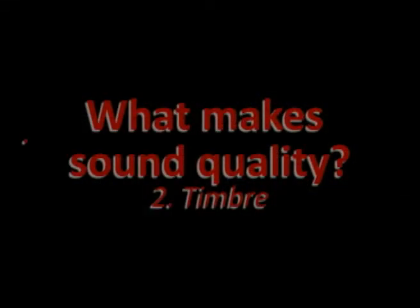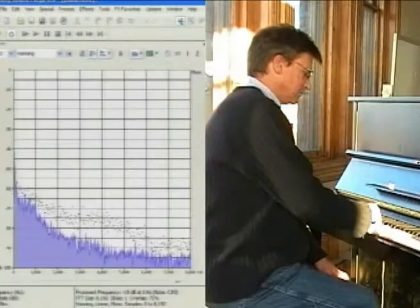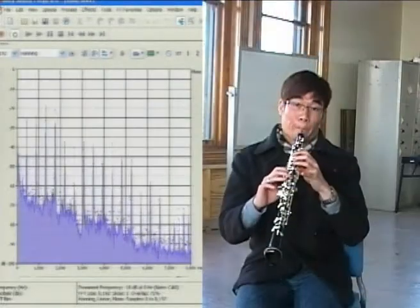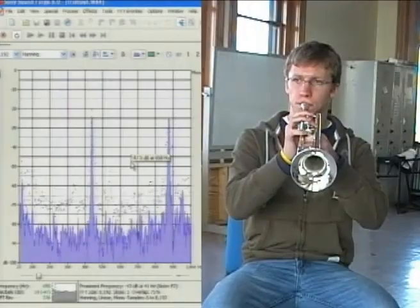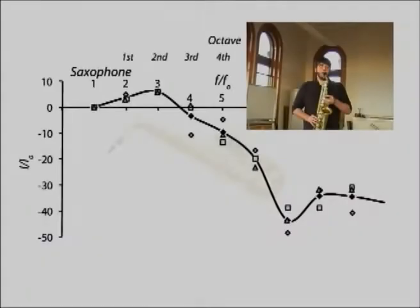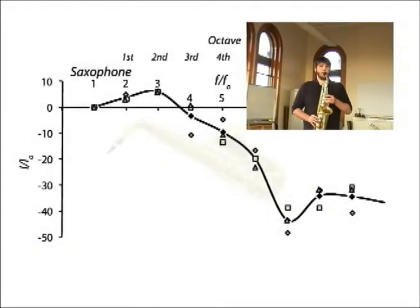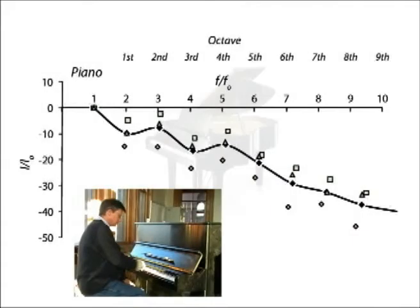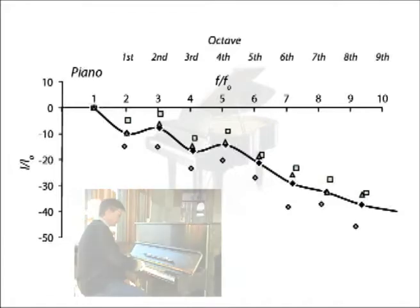The other important aspect of sound quality is timbre, T-I-M-B-R-E. This is what makes the piano sound different from the oboe, which sounds different from the trumpet, and so on. Timbre is a phenomenon of the overtones. We can see this by graphing the sound intensity of each of the overtones for each instrument. To make the comparison easier, we plot the overtone's sound intensity relative to the fundamental tone, versus the overtone's frequency relative to the fundamental's frequency.